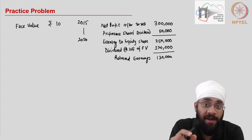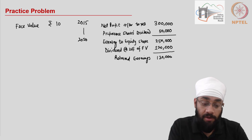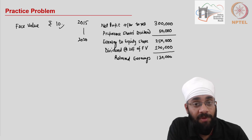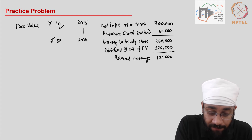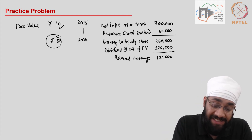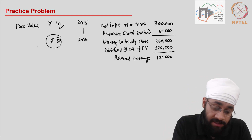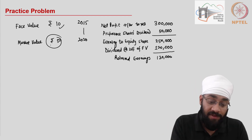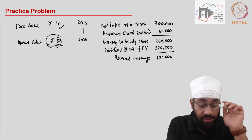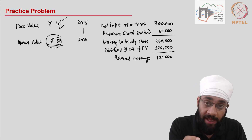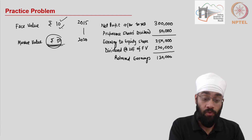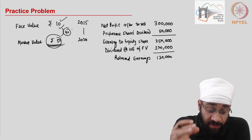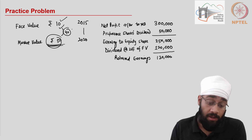If you invested at 10 rupees five years ago and the company has done well, you might sell the share at 50 rupees. If someone is willing to buy at 50 and the transaction takes place, that becomes the market price. The share certificate still says 10 as the face value, but in the market it trades at a premium of 40 rupees — that's the increase in value over five years.